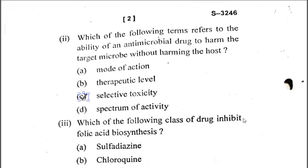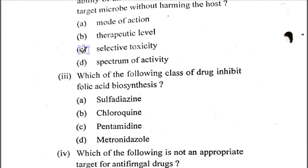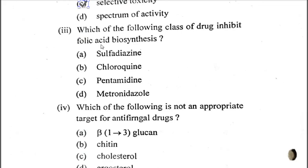Question three: Which of the following class of drug inhibits folic acid biosynthesis? A) sulfadiazine, B) chloroquine, C) pentamidine, D) metronidazole. The correct option is sulfadiazine. Drugs like trimethoprim and sulfadiazine inhibit folic acid biosynthesis, which is required for the synthesis of purines and pyrimidines.